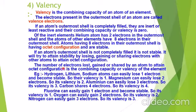The number of electrons lost, gained, or shared by an atom to attain octet configuration is the combining capacity or valency of the element. Hydrogen, lithium, and sodium can easily lose one electron and become stable, so their valency is one. Magnesium can easily lose two electrons, so its valency is two. Aluminium can easily lose three electrons, so its valency is three. Carbon shares four electrons, so its valency is four — it neither loses nor gains four electrons, it shares them.